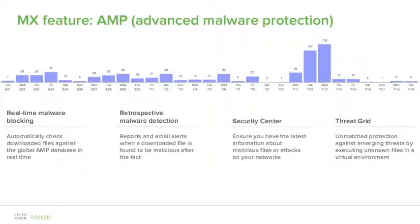Downloaded files get checked in real time against the Global AMP Database. We can even retrospectively detect malware — no solution can detect 100% of threats, so one of your users might be patient zero. If they download malware that's not yet been identified but is flagged hours or days later, you as the administrator will be notified to take corrective action. The Security Center gives a graphical view of what threats have been blocked, where they're coming from, and which users or hosts are triggering them, combining information from IPS and IDS for a holistic view.